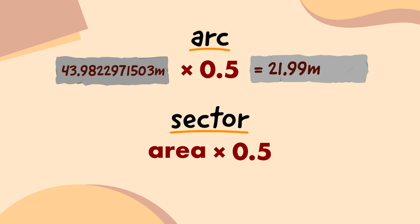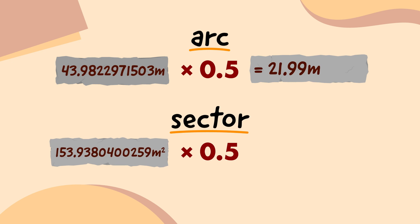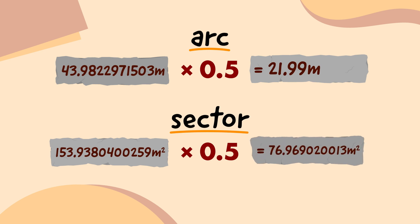Now let's work out the sector's area. And for that, we need the full circle's area, which I worked out to be 153.9380400259 square metres. And if we multiply that number by 0.5, we get 76.969020013. So the sector's area is 76.97 square metres.